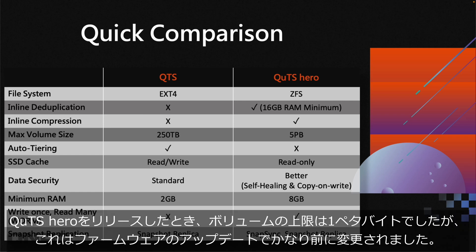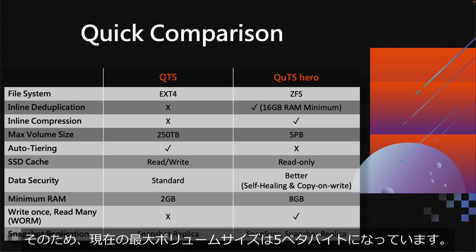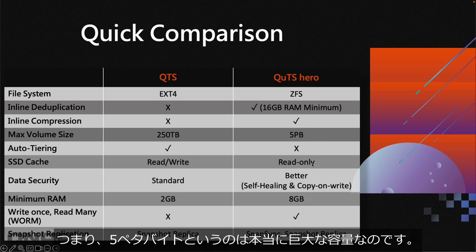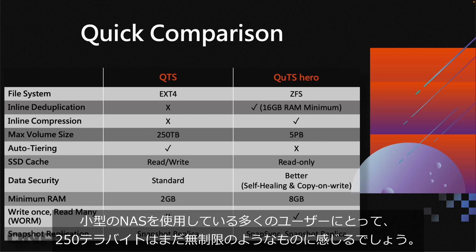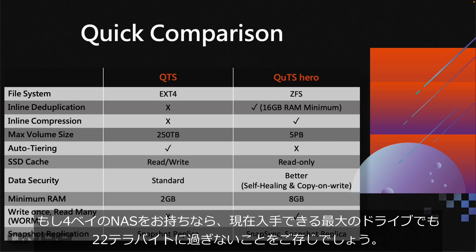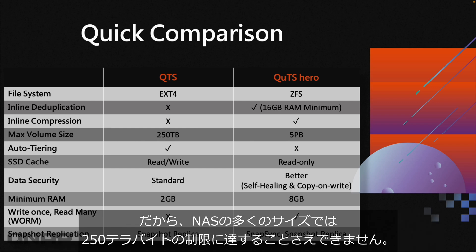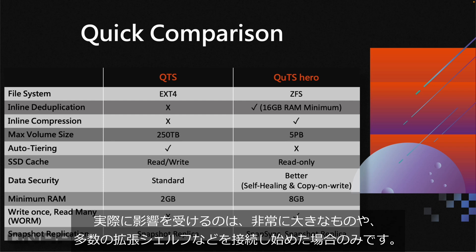When QUTS Hero first launched, the upper volume limit was one petabyte, but that was updated in firmware and is now five petabytes. QTS sits at 250 terabytes, which for many users with smaller NAS is effectively unlimited. With a four-bay NAS and the largest drives at 22 terabytes today, you can't even hit that 250 terabyte limit — it only really affects very large deployments or setups with many expansion shelves.